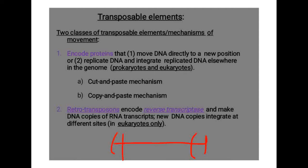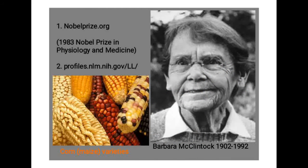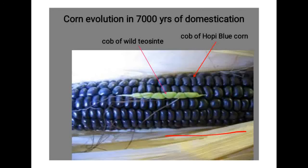Transposable elements have two ends. These ends have inverted repeats — a gene sequence that is repeated and inverted from one end to the other. They also have a small gene which codes for a particular type of enzyme called transposase.